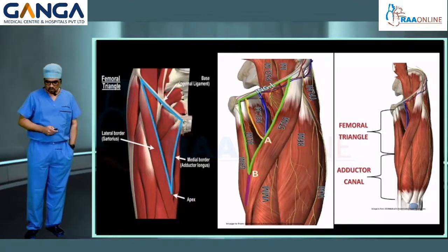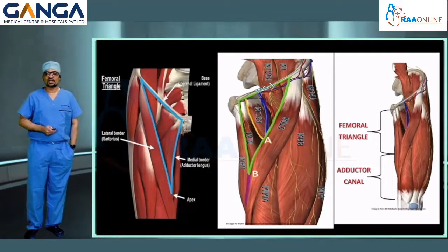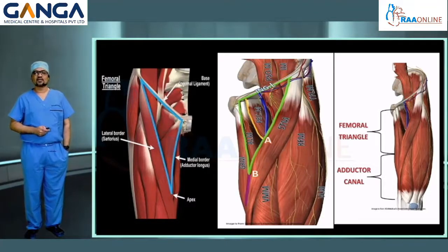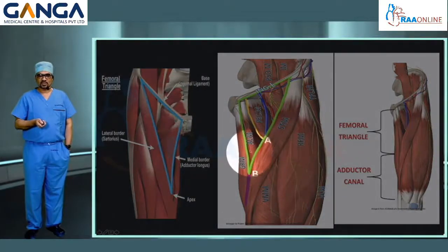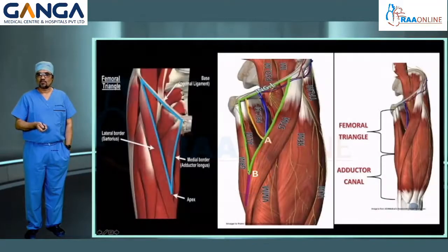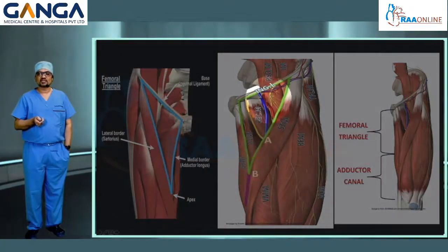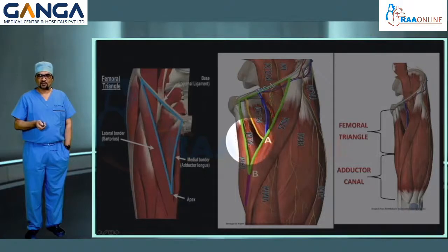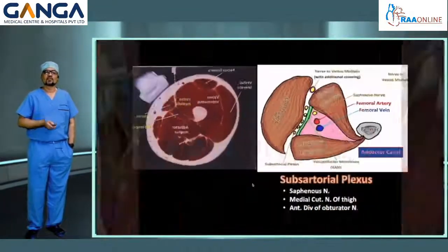To understand the blocks at the level of the thigh, we need to understand two prominent landmarks: the femoral triangle and the adductor canal. We must differentiate their territories. This is demarcated by the apex of the femoral triangle, which is formed by the intersection of the medial border of adductor longus and the medial border of sartorius. The area above the apex is considered the femoral triangle area, and the area below the apex, under the sartorius, is considered the adductor canal area.